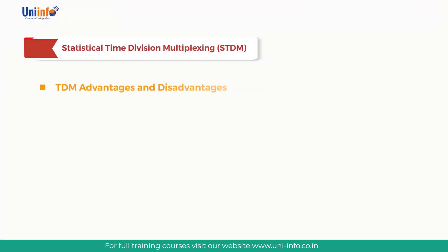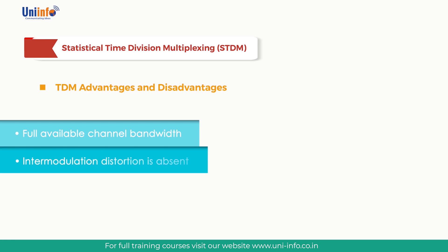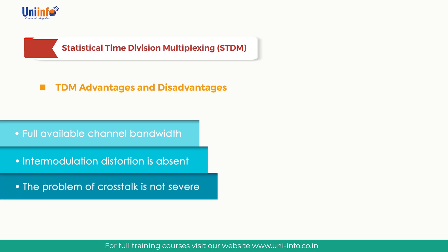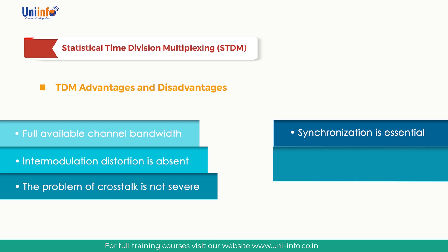Advantages of TDM: First, full available channel bandwidth can be utilized for each channel. Second, intermodulation distortion is absent. Third, TDM circuitry is not very complex. Fourth, the problem of crosstalk is not severe. Disadvantages of TDM: First, synchronization is essential for proper operation. Second, due to slow narrowband fading, all TDM channels may get wiped out.